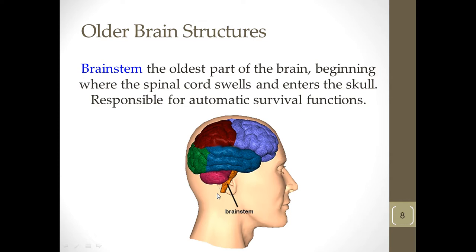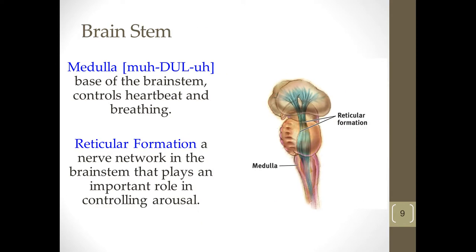Let's break the brain stem down into its primary components. The medulla, at the bottom, controls your heart rate and breathing — you need a medulla to survive. Just above that is the pons, which coordinates your movement. If you can't move, think about being out in the wild — you're prey. So it has a strong evolutionary need to exist and is part of that earliest form of the brain, the brain stem.